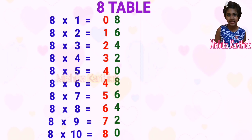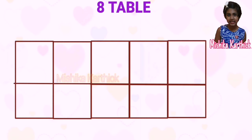Now we have the 8 times table using Method 1. Now we will see the second method, using a 5 by 2 square table.